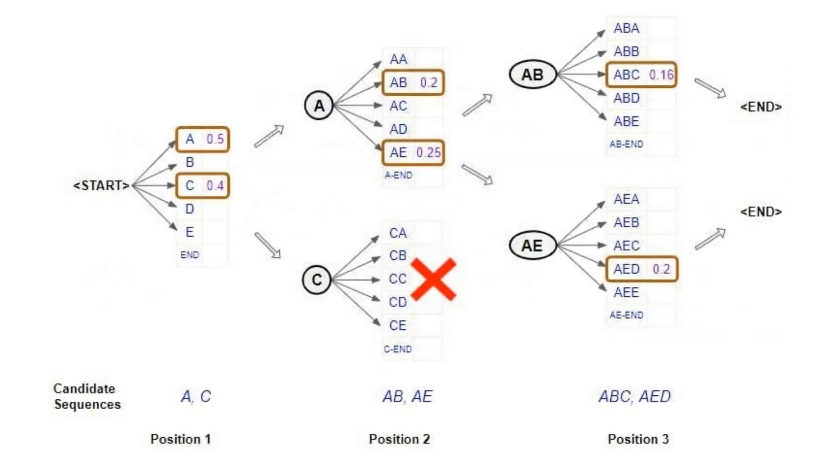Another critical aspect of the paper was the introduction of a technique called beam search during inference. Beam search is a heuristic search algorithm that explores the most promising output sequences, keeping track of a fixed number of the best partial translations at each time step, the beam width. By doing this, it balances the need for computational efficiency with the desire for high-quality translations.